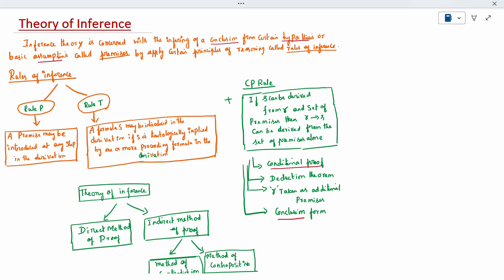If we have R conditional to S, we can take R as additional premises anywhere in the derivation and write only S. This is called the CP rule. Next, the methods to solve in the theory of inference.